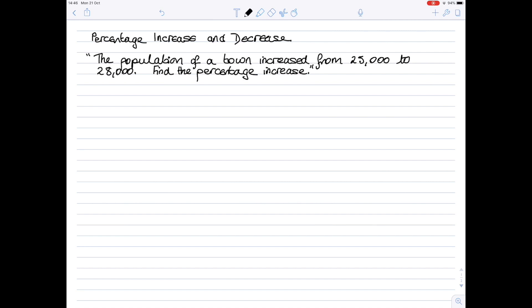The important thing to remember is that you always start with the original value. So here the town population increased from 25,000 to 28,000, so your original value is 25,000. If we write it down, the original value is 25,000.